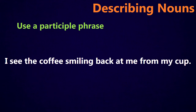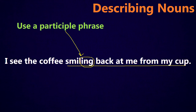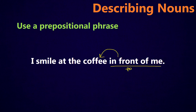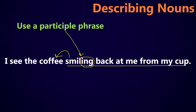Or you can use a participle phrase to describe the noun. For example: I see the coffee smiling back at me from my cup. Smiling back at me from my cup is the participle phrase — it starts with an -ing verb and describes the coffee. What about the coffee? The coffee smiling back at me from my cup. Isn't that much more descriptive than simply saying I see the coffee? I smile at the coffee in front of me. I see the coffee smiling back at me. It's a happy meeting.